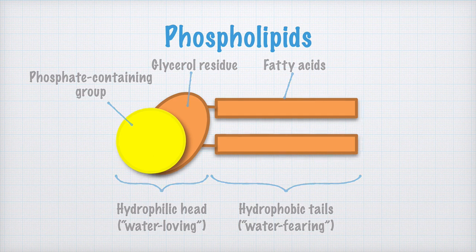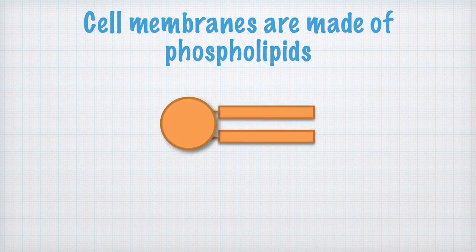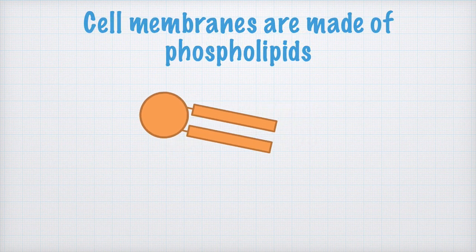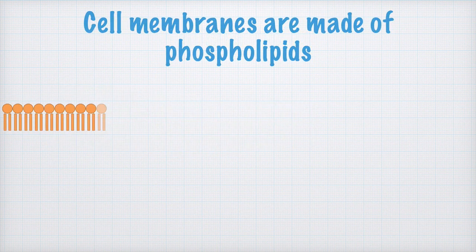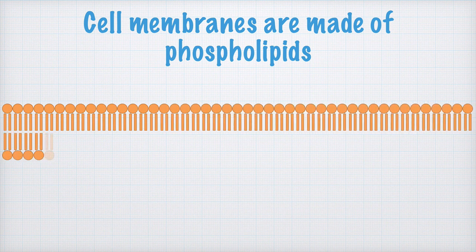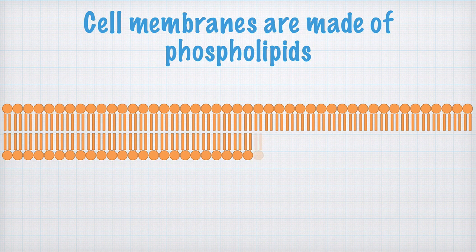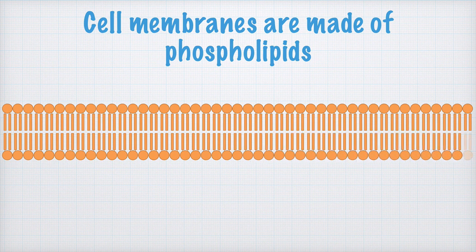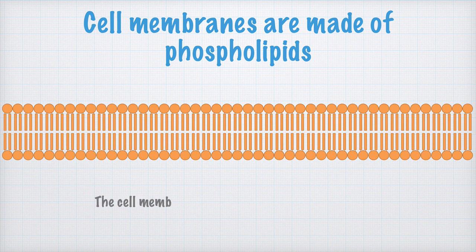Most often, we simplify the phospholipid even further and draw it just like this. We also write here that cell membranes are made of phospholipids. In a cell membrane like this, the phospholipids form a double layer. In this way, the hydrophilic heads are exposed to the surrounding water. The hydrophobic tails are instead on the inside of the membrane. Let's write this too, that the cell membrane consists of a double layer of phospholipids.